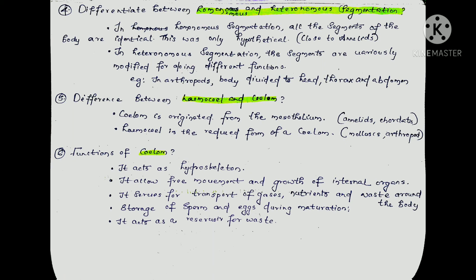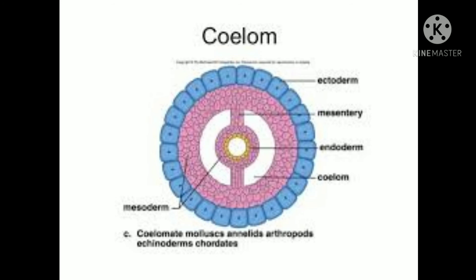So the coelom functions: it acts as a hydroskeleton; allows free movement of internal organs; transports gases, nutrients, and waste; and stores sperm and eggs. The coelom is an important body cavity. Understanding whether an animal has a coelom or not is an important distinction between different animal groups.